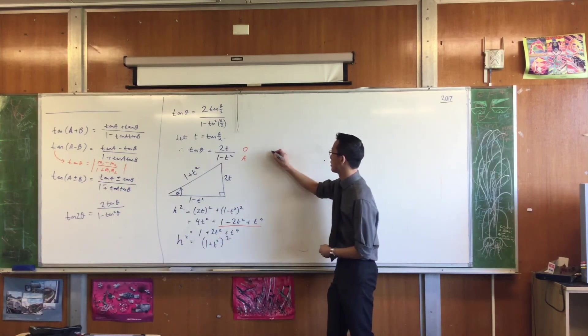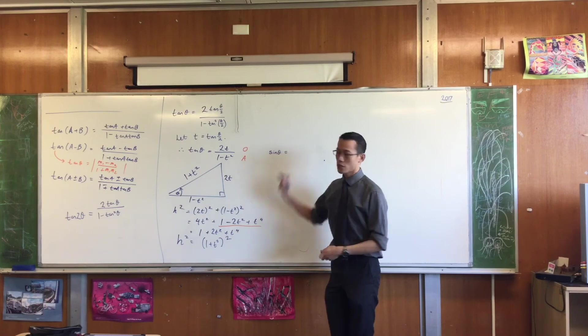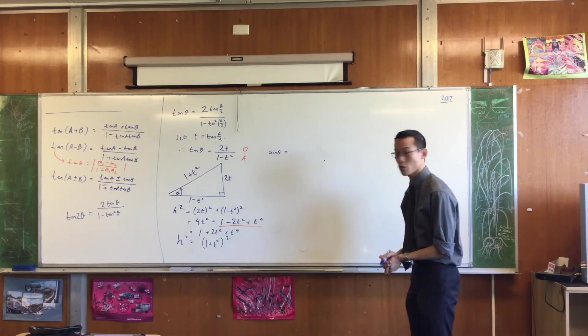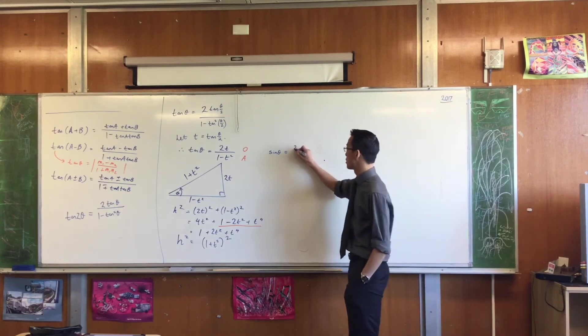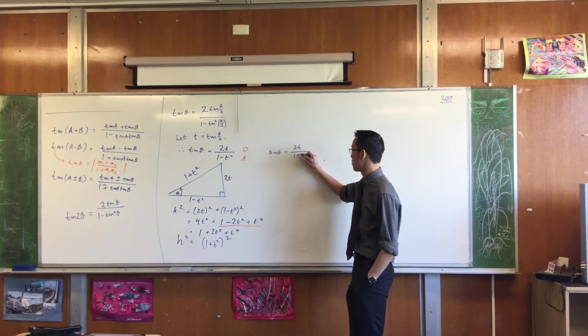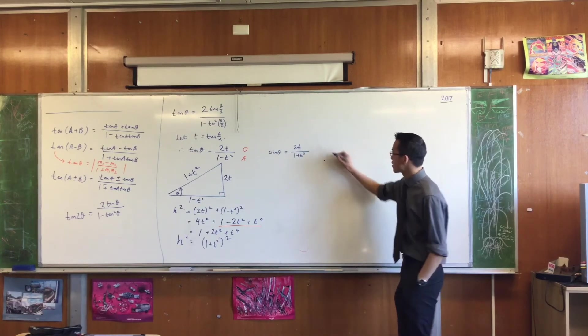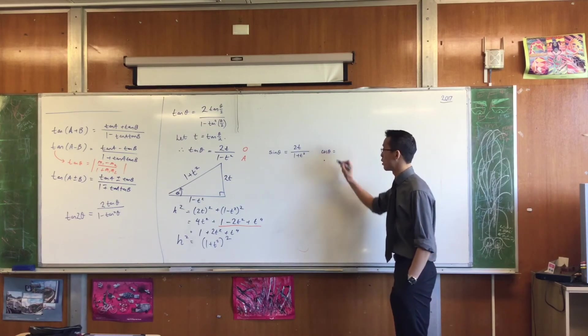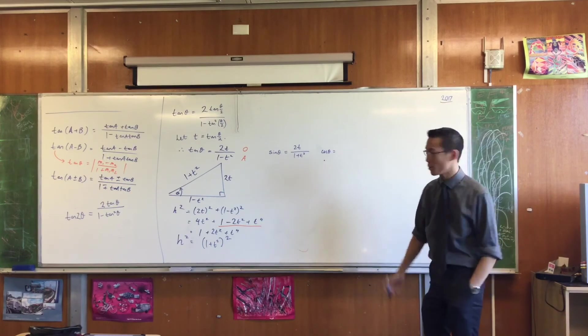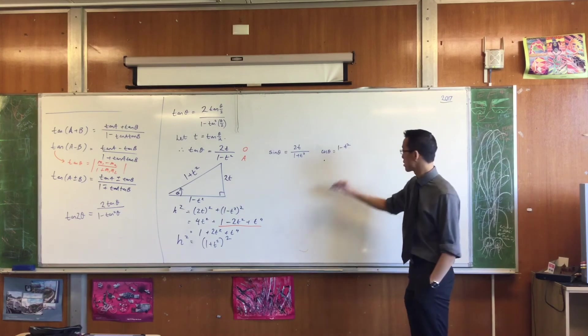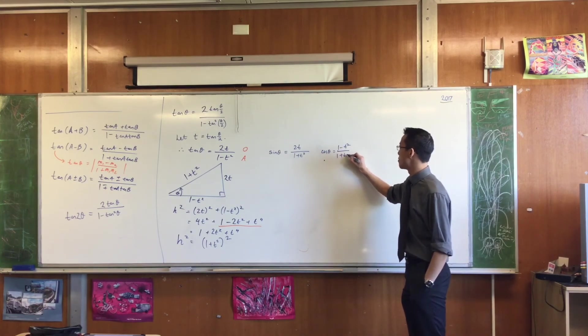I can say, I'm going to do it here. Sin θ is opposite on hypotenuse, is it not? Which in this triangle is 2T / (1 + T²). And likewise, cos θ is, or conversely I should say, is adjacent on hypotenuse. So that's going to be (1 - T²) / (1 + T²).